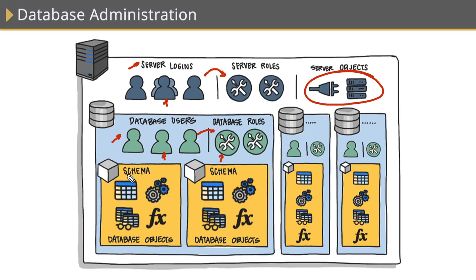We can also simplify permission assignment by utilizing a schema, which in SQL Server is simply a container for database objects. It simplifies permission assignments to a group of objects, very much like database roles work for database users and server roles work for server logins. Note that schema is a loaded term — in database theory it means the structure or design of a database, and in SQL Server it means that too, but we also have a database object called schema that acts as that container. That's SQL Server security in a nutshell.